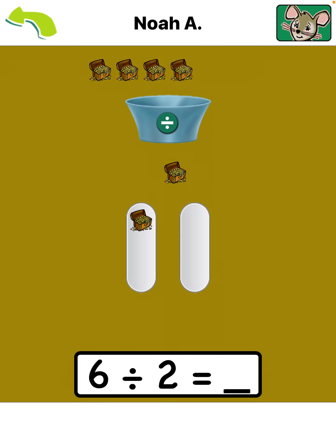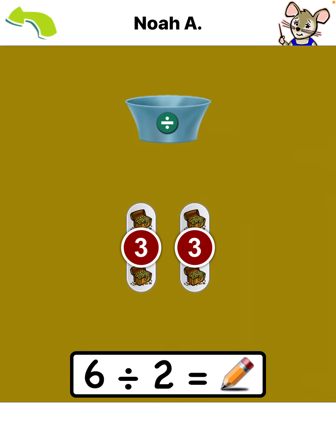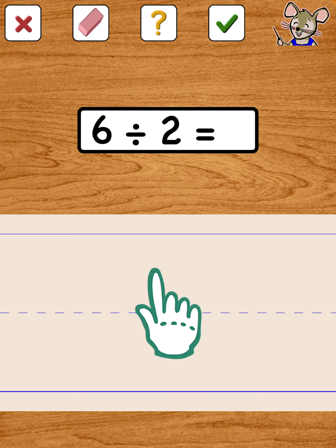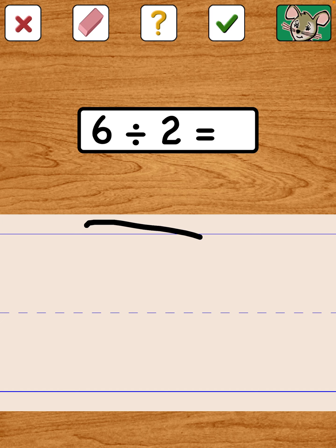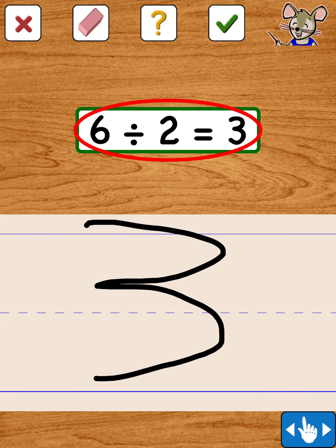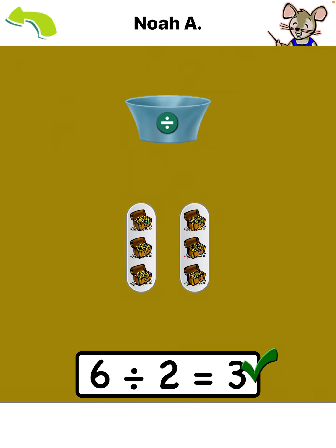Tap here until... one item per group, two items per group, three items per group. Write your answer on the paper using your pointer finger. Tap the question mark if you need help writing the answer. The number you write is shown here. Tap the green check or your answer if you are done writing. Nice job! Six divided by two equals three.